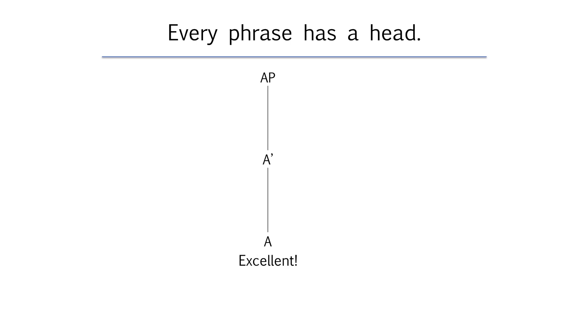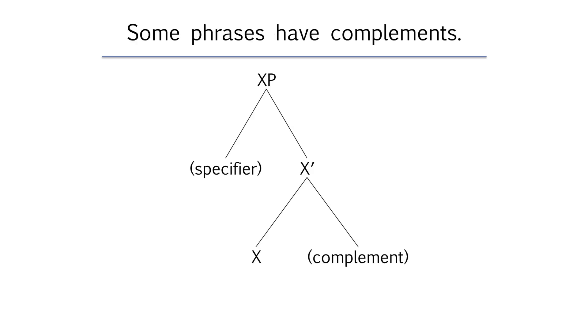But X-bar theory proposes that phrases can have more in them than just a head. A phrase might optionally have another phrase inside it in a position that's sister to the head and daughter to the bar level. If there's a phrase in that position it's called the complement. The most common kinds of head complement relationship we see are a verb taking an object or preposition taking an object. Let's look at some examples.